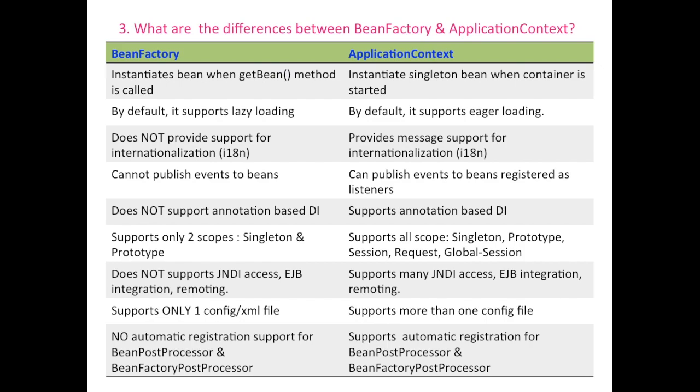Now let's look at the differences between Bean Factory and Application Context. The Bean Factory instantiates beans when the getBean() method is called, whereas the Application Context instantiates singleton beans when the container is started. Bean Factory by default supports lazy loading, while Application Context by default supports eager loading. Bean Factory does not provide support for internationalization, whereas Application Context provides message support for internationalization.